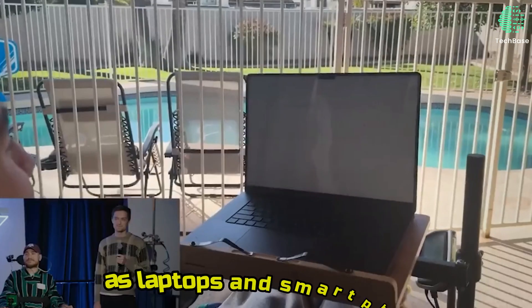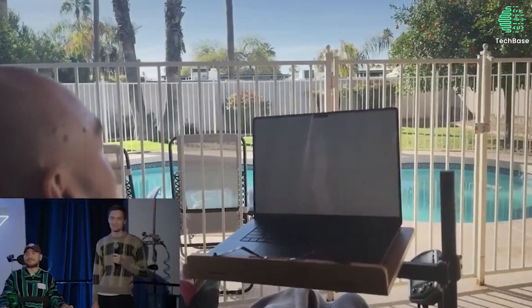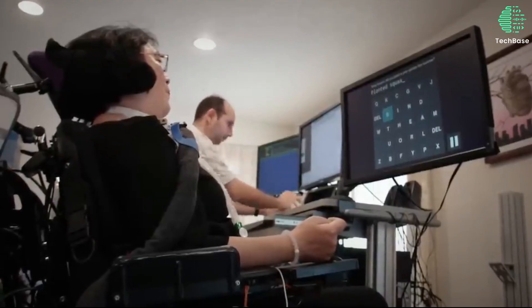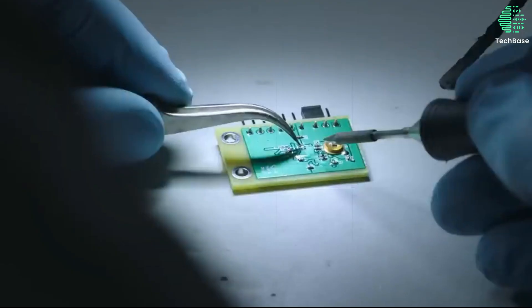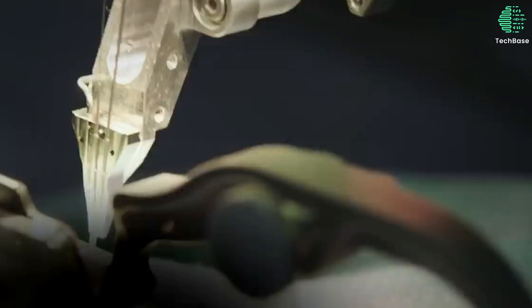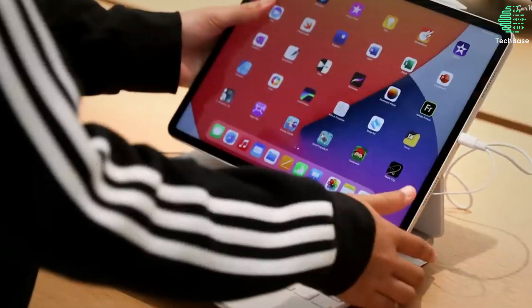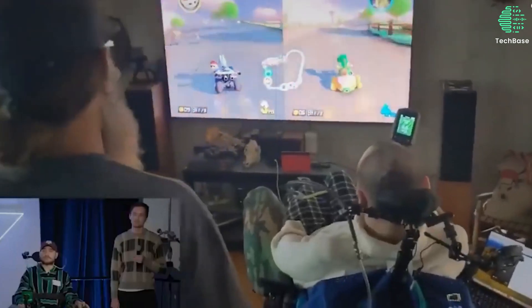With the ability to control external technology such as laptops and smartphones using only his neural signals, Arbaugh regained autonomy over everyday tasks that were once challenging or impossible. Arbaugh's journey serves as a powerful testament to the life-changing impact of Neuralink's technology. Through the brain chip implant, he gained the ability to engage in activities that were previously out of reach, such as playing online chess and video games like Civilization VI.